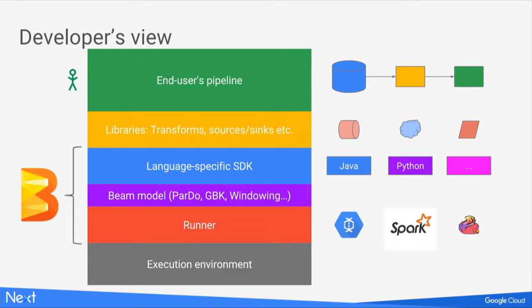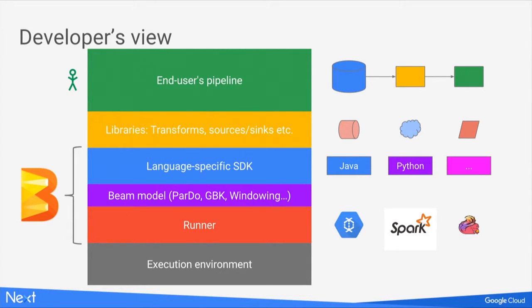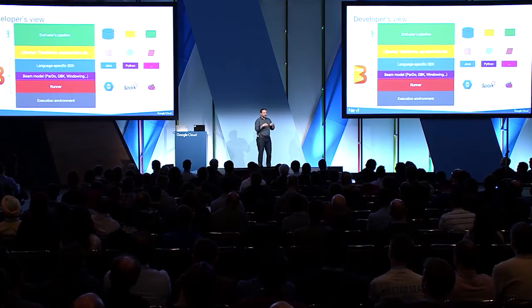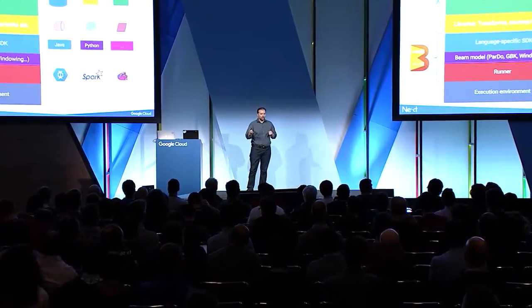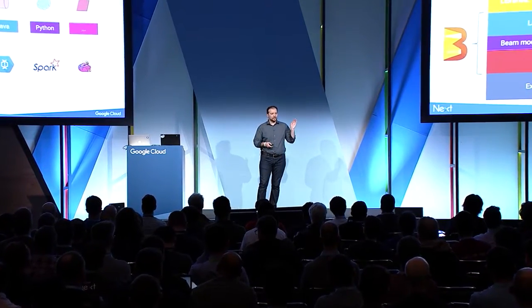From a developer's point of view, you write pipeline code. We support multiple languages — Java and Python. The SDKs give access to a wide variety of data transformation functions and are language-independent, offering the same functionality in both languages. We call it the Beam model. For example, if you want to process data elements in parallel, you use a transform called ParDo. If you want to group things by key, you use a GroupByKey transform. Once you've written your pipeline, you can run it in Cloud Dataflow, Spark, or Flink.